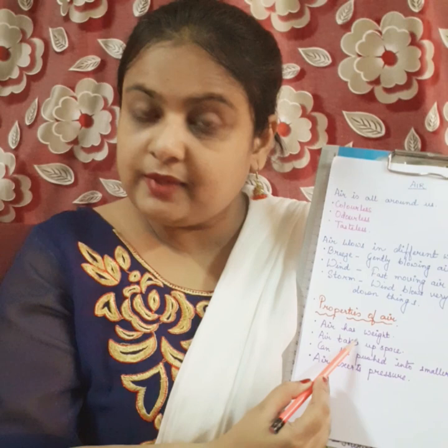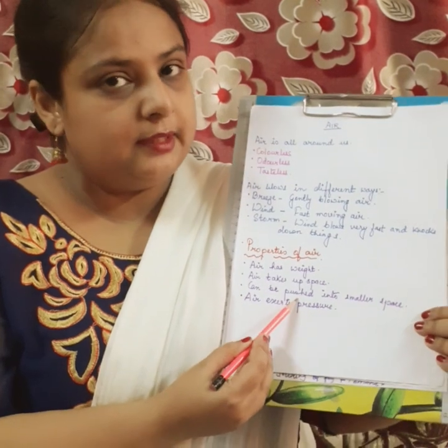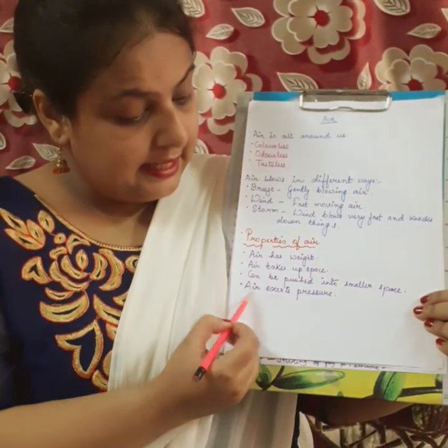So by doing this small experiment, you can understand that air exerts pressure. Not only this — when people use a parachute and fly in the air, that is also with the help of air pressure. When air pressure moves them upward, the parachute flies up, and when the air pressure is low and pushes downward, the parachute lands. So please remember the properties of air: air has weight, air takes up space, air can be pushed into a smaller space, and air exerts pressure.